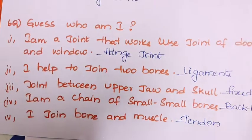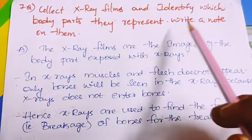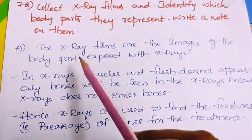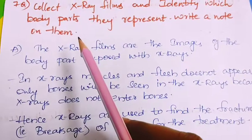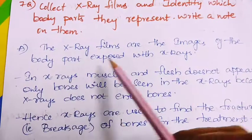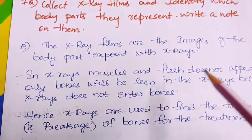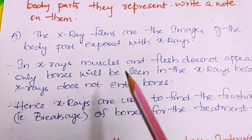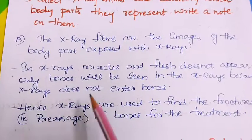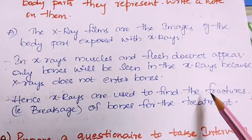Seventh question: collect X-ray films and identify which body parts they represent. When we take an X-ray, the X-ray films are images of body parts exposed with X-rays. Muscles and flesh do not appear in X-rays — only bones will be seen, because X-rays do not pass through bones. Hence X-rays are used to find fractures, that is breakages of bones, for further treatment.